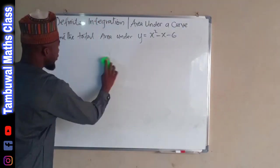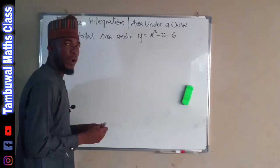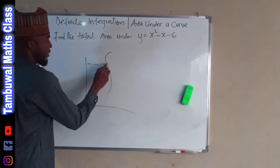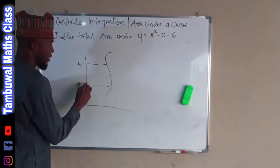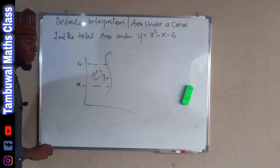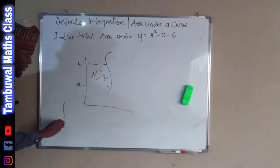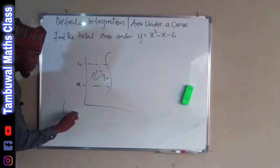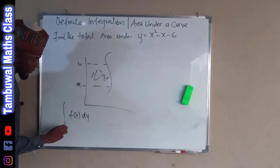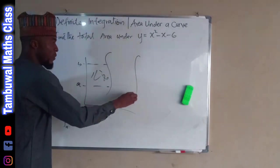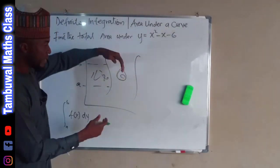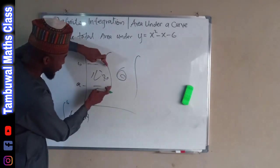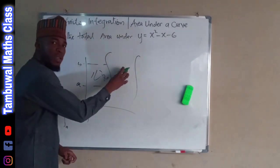Sometimes the boundaries may come from the y-axis. Suppose we have a graph like this where this point is b and this point is a, and we need to find the area here. We are going to use the integral of the function f of y with respect to y from a to b. If there are two curves, we find the total area from one curve to the y-axis and subtract the area from the other curve to the y-axis to get the remaining area.